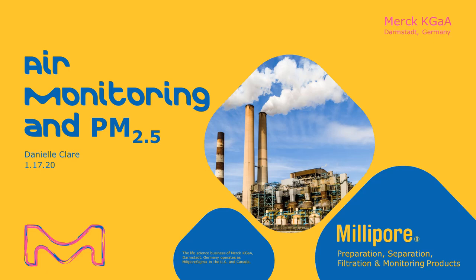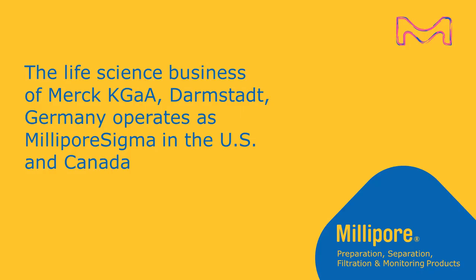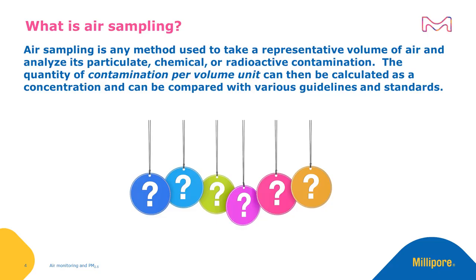Air Monitoring in PM2.5. Just what is air sampling? Air sampling is any method used to take a representative volume of air and analyze its particulate, chemical, or radioactive contamination. That representative volume of air can then be used to calculate a contamination per volume unit concentration and can be compared to various guidelines and standards. Air sampling and monitoring is how we quantify air contamination.